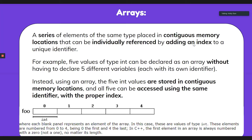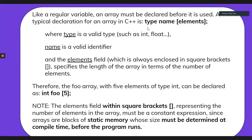Like a regular variable, an array can be declared before it is used. A typical declaration for an array in C++ is: type, name, and then elements in square brackets. Type is either your integers, doubles, or floats; name is any valid identifier following the same rules we discussed — no keywords, no starting with a number, no random symbols. The elements field in square brackets specifies the length of the array.